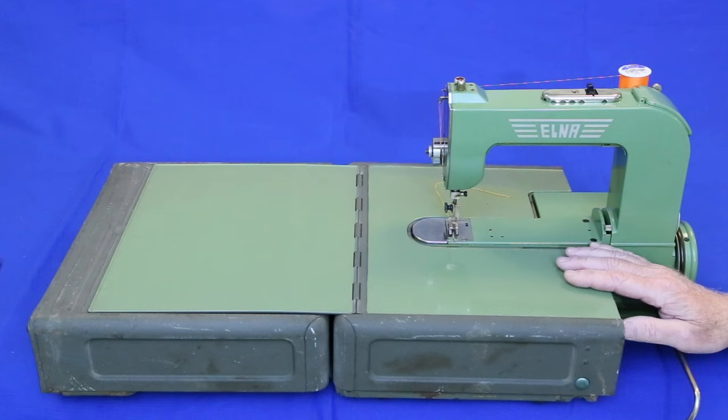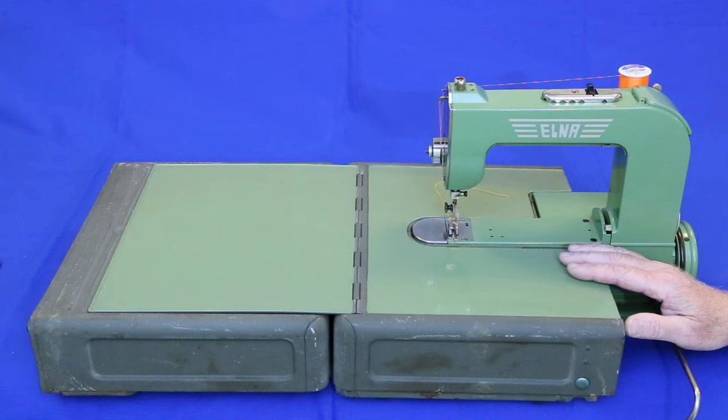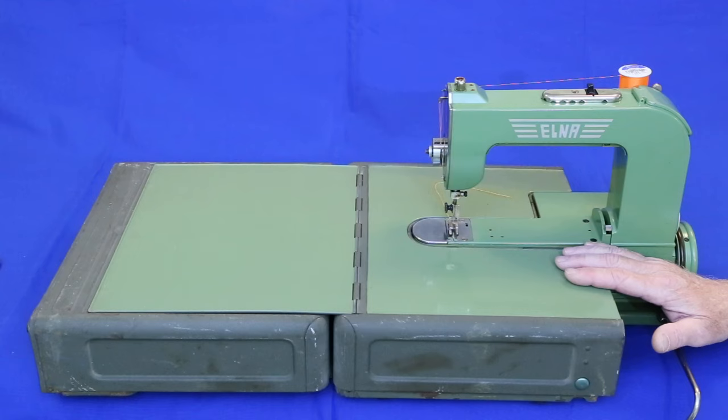These first Elnas didn't really have a model number, though in time they became known as the Model 1. Manufactured in Switzerland from 1940 to 1952, when they were superseded by the Elna Supermatic, between 65,000 and half a million were released.